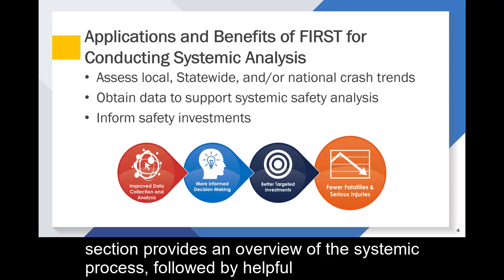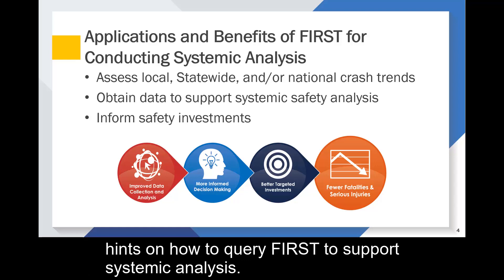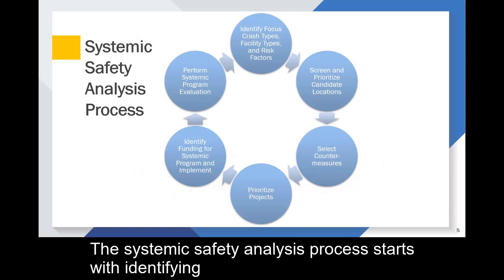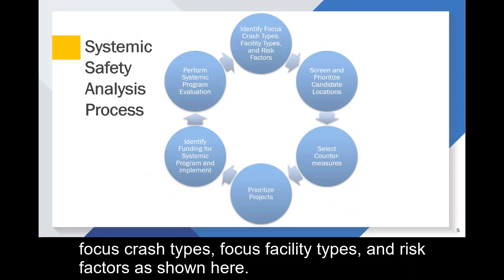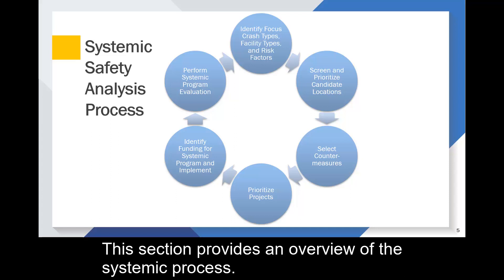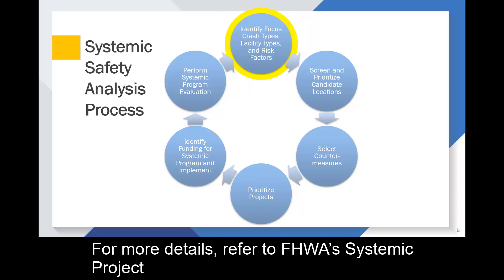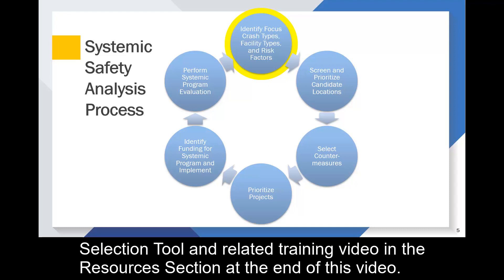The next section provides an overview of the systemic process, followed by helpful hints on how to query FIRST to support systemic analysis. The systemic safety analysis process starts with identifying focus crash types, focus facility types, and risk factors. For more details, refer to FHWA's Systemic Project Selection Tool and related training video in the Resources section at the end of this video.